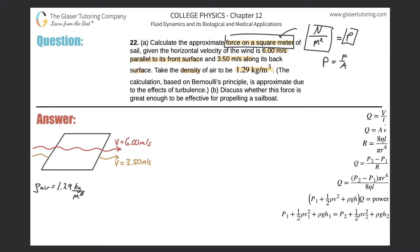We have two different velocities, and therefore there will be pressure differentials created between the two. This area will be a location of higher pressure — we'll call this P1. And this area will be a location of lower pressure — we'll call that P2, such that P1 is greater than P2.